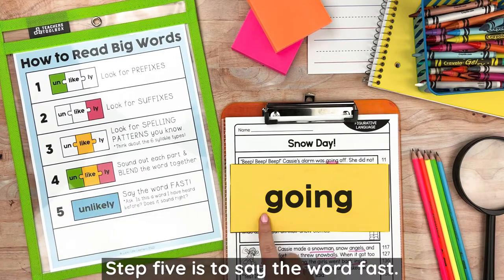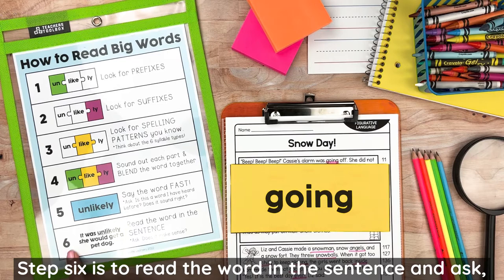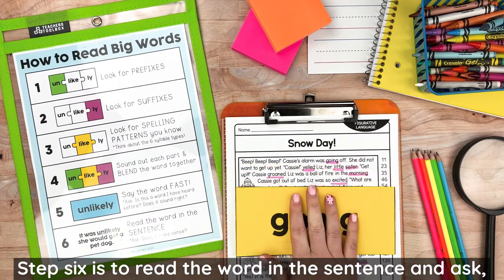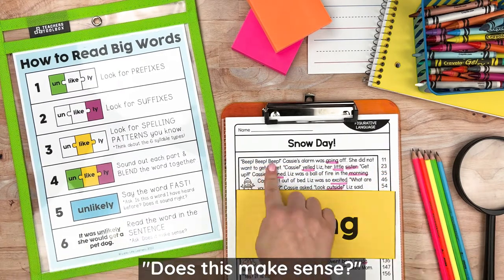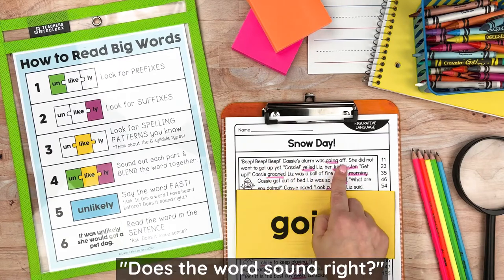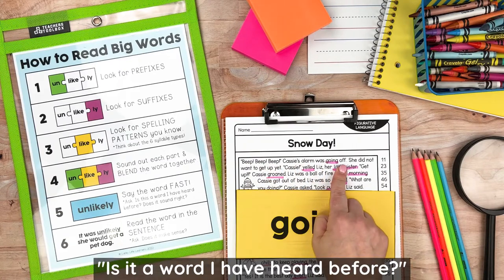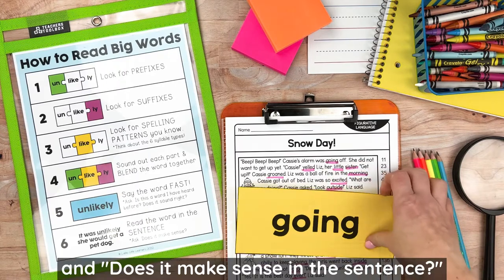Step five is to say the word fast: going. Step six is to read the word in the sentence and ask: does this make sense? Does the word sound right? Is it a word I have heard before? And does it make sense in the sentence?